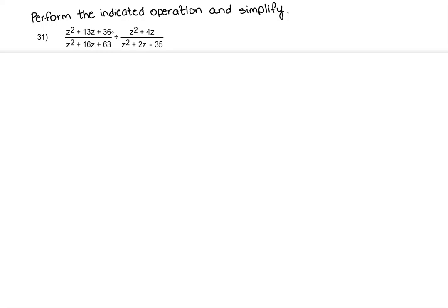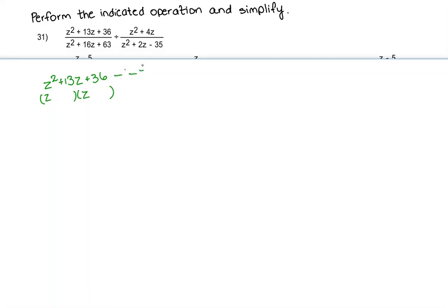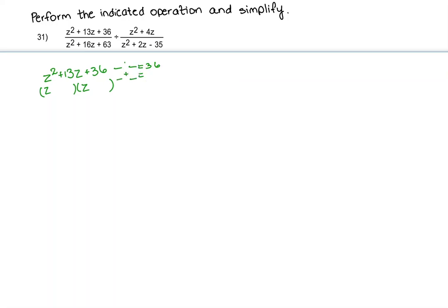To start off, the first numerator we have is z squared plus 13z plus 36. We're going to go ahead and factor that, because factoring is a way of simplifying. If we have a trinomial and it can be factored, it can always factor into two binomials. Because this z squared has a coefficient of 1, I'm just going to separate my z's, and then look for two factors that multiply to equal 36 and add to equal the middle term, which is 13.